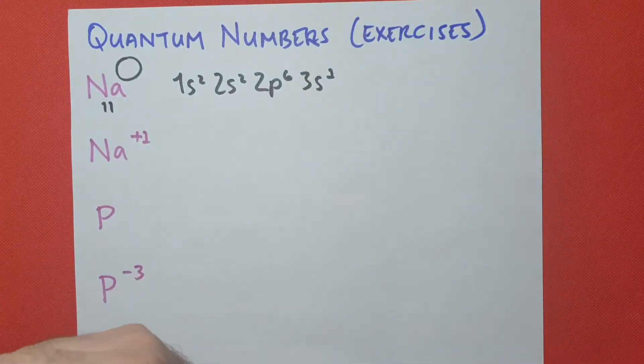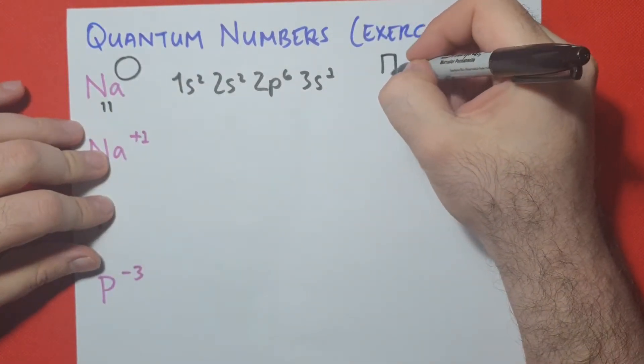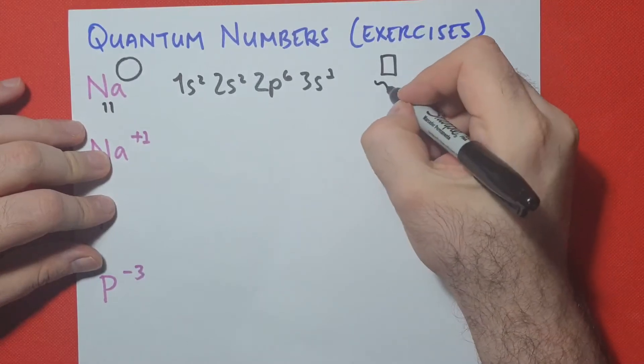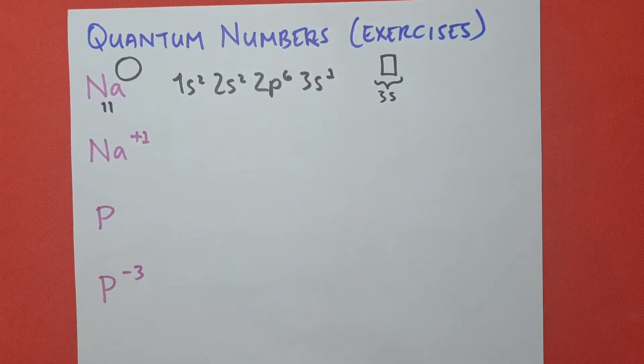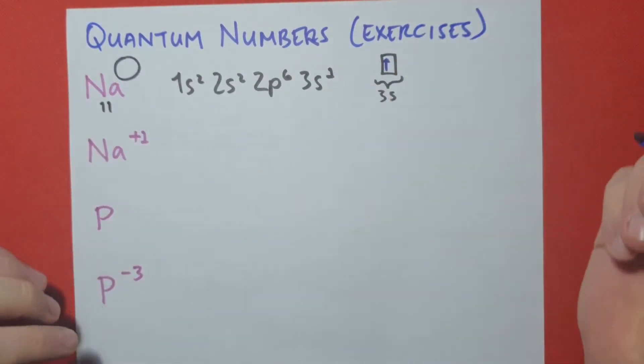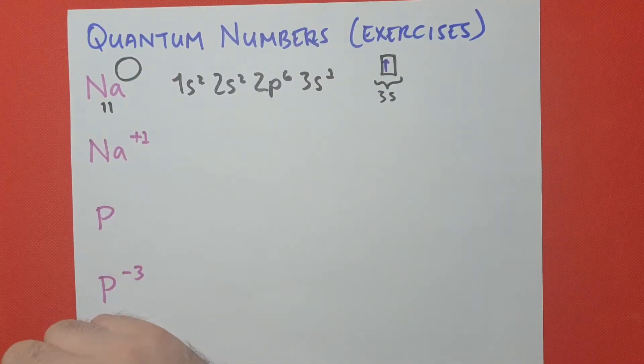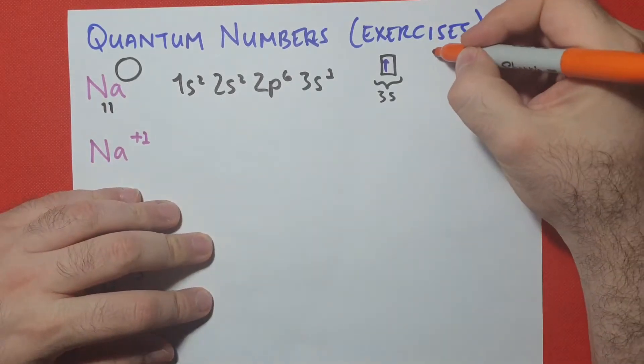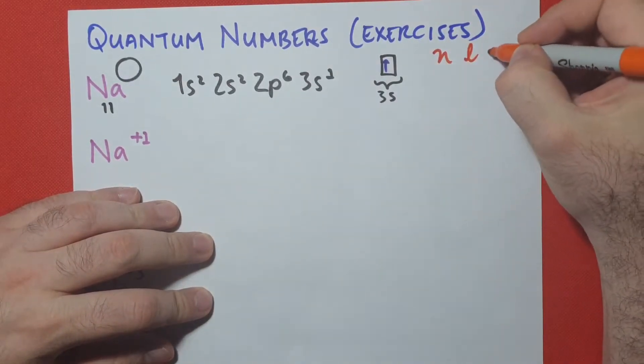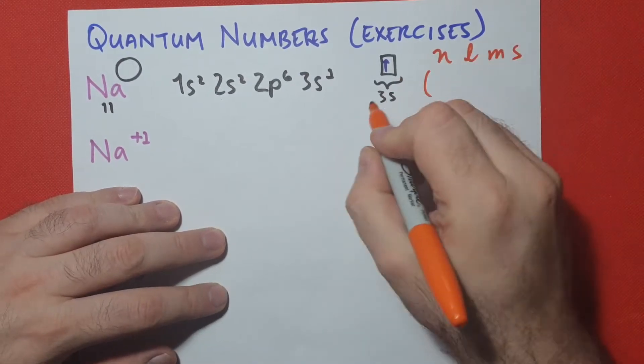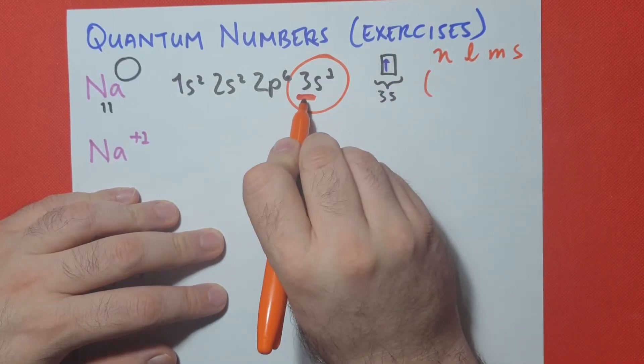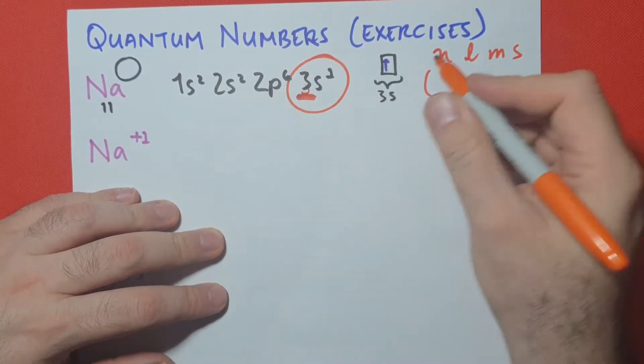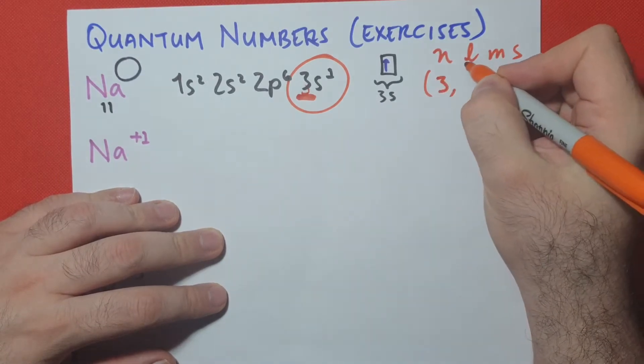So once we analyze this orbital, we write one box, because this box is s, only one orientation, so 3s, and we have one electron. And that one electron is pointing upwards. So when we analyze this and we want to give our quantum numbers, we're going to say that the main quantum number, N, L, M, S, is going to be 3, because our highest level, our highest orbital is 3s. This is the one we're looking at. So our highest number is number 3.